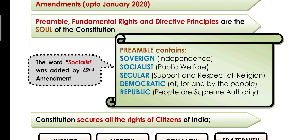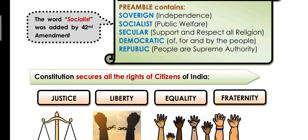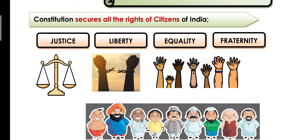So these are certain words contained in the preamble that tell us the core objective of the constitution. Any law which is against the constitution will be annulled — cancelled, repealed, changed. Everything has to be according to the constitution. The constitution secures the rights of all citizens.